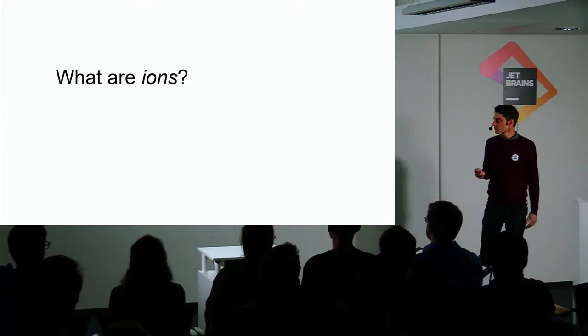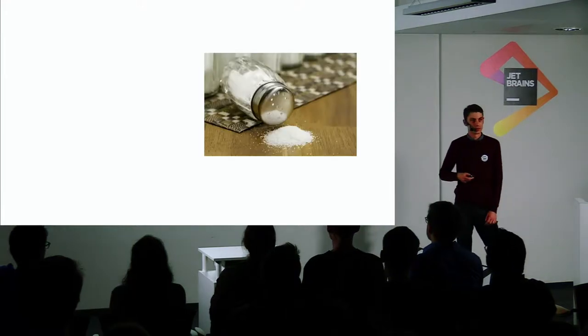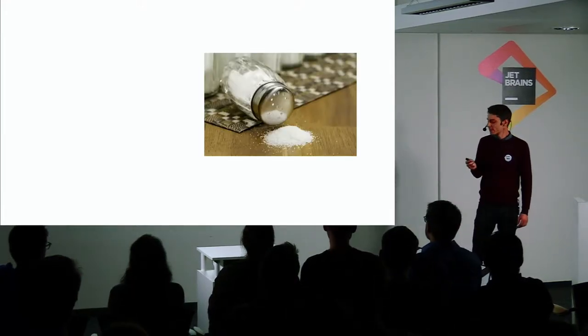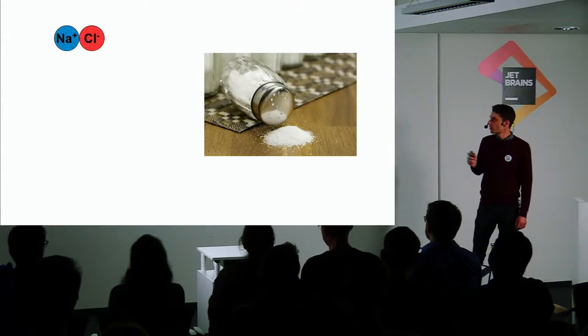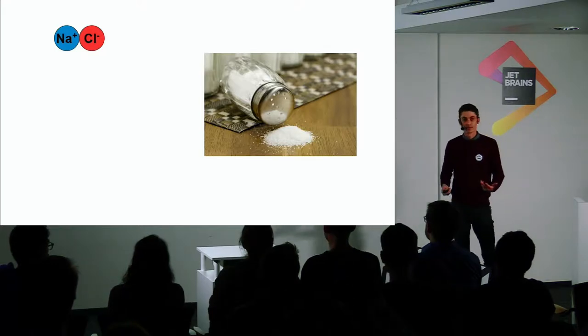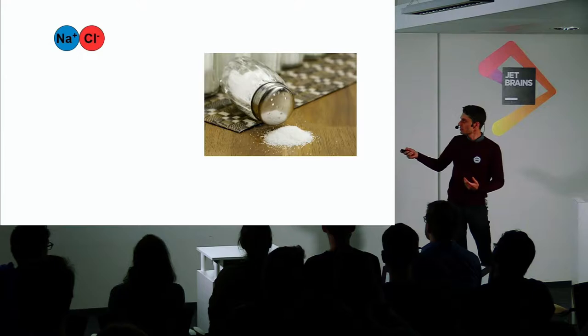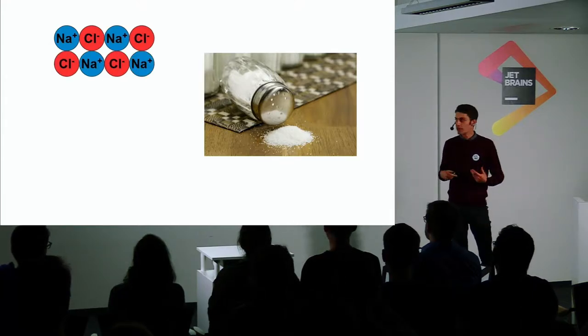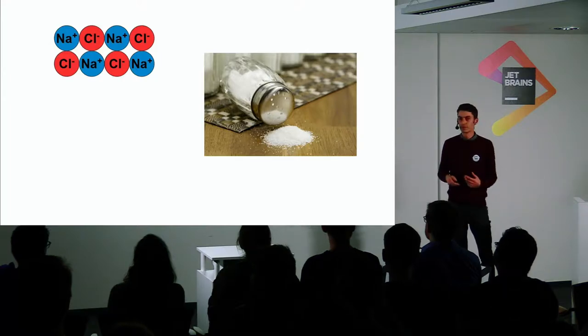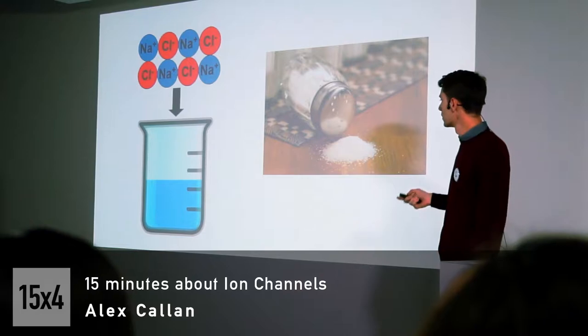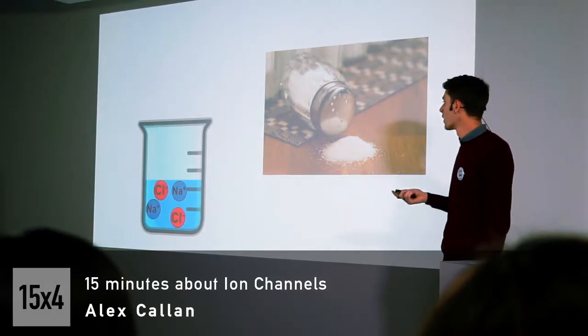What are ions? Here are some ions you're probably familiar with already—this is ordinary table salt. It's made up of ions of sodium and chloride. Ions are just atoms that have an electric charge. These guys are positively charged, and the chloride ions are negatively charged. Stack enough of them together, you end up with a crystal of salt.